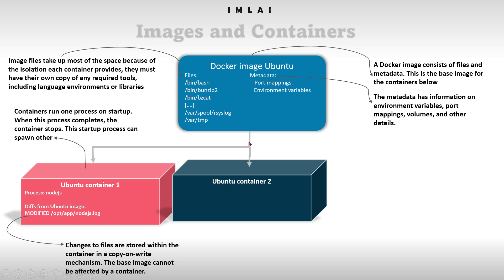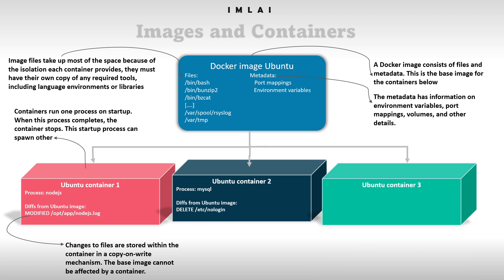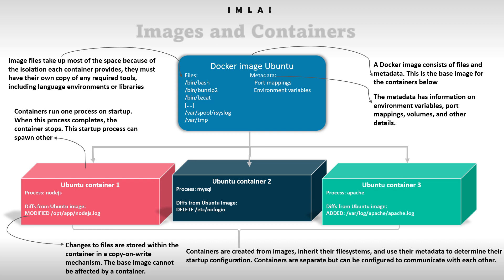The second container also uses Ubuntu as the base image, but the process running inside is MySQL. The third container similarly uses Ubuntu as the base image, but the process running is Apache2, which deploys an application. To summarize: containers are created from images, inherit their file systems, and use their metadata to determine startup configuration. Containers are separate but can be configured to communicate with each other.